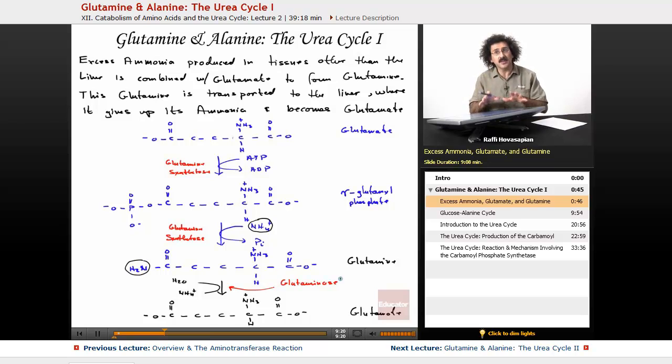The excess ammonia from other tissues in the body, the excess ammonia that's produced, is tied up as glutamine by using glutamate. Glutamate to glutamine, glutamine to the liver. Glutamine gives up this ammonia that gets processed. That's going to actually enter the urea cycle and turns into glutamate. So glutamate is the central molecule of amino acid metabolism.